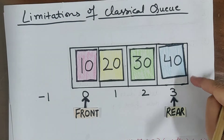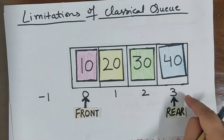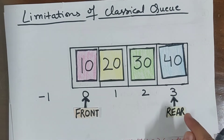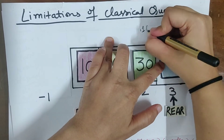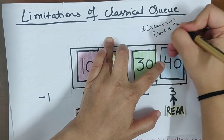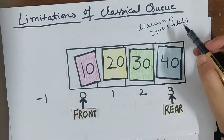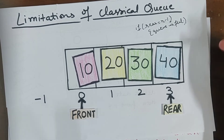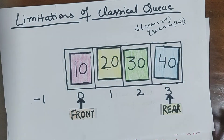Now if I want to enqueue 50, I won't be able to insert it because my rear will reach the maximum of the queue. If my array size is 4, rear has reached 3. So the condition — if rear equals n minus 1, queue is full — becomes true. Here n is 4, so rear points to 3, meaning there is no space to insert new data.